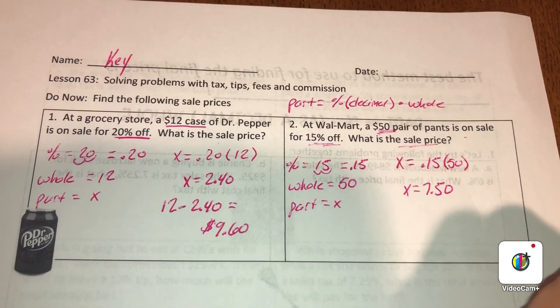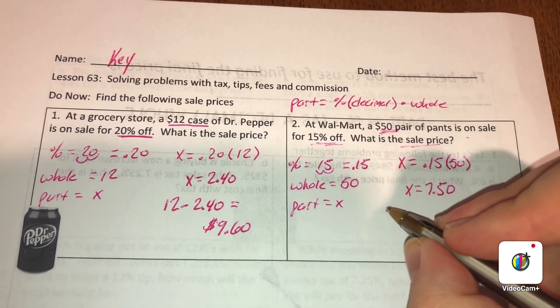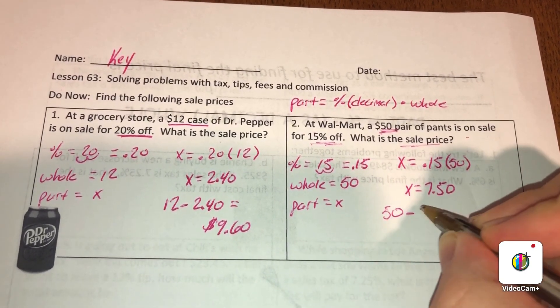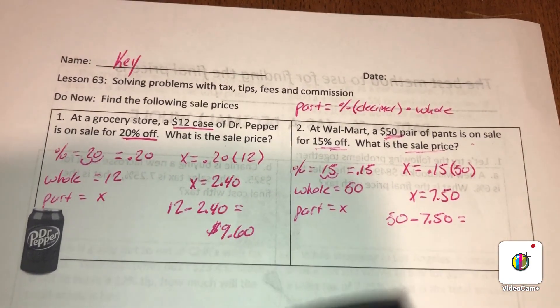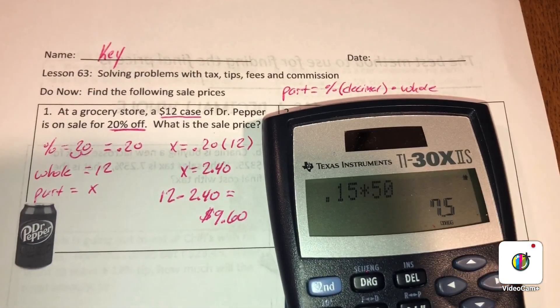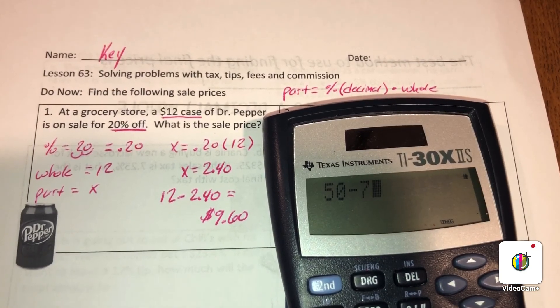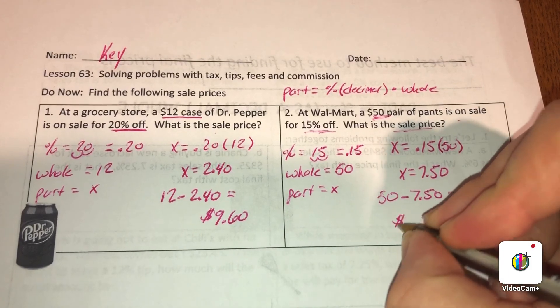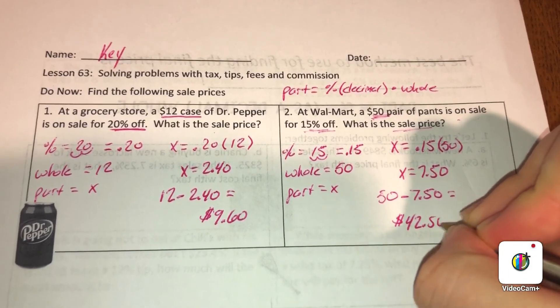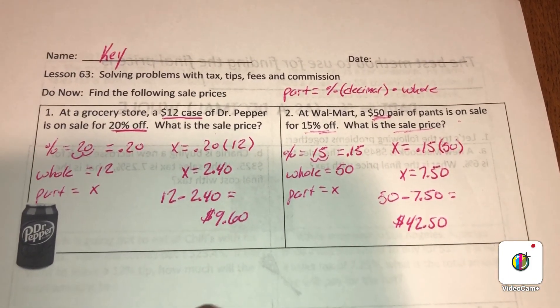Now we just need to subtract the original amount minus the discount amount to get our sale price. So 50 minus $7.50 gives us $42.50. That's how much you would be paying for the sale price.